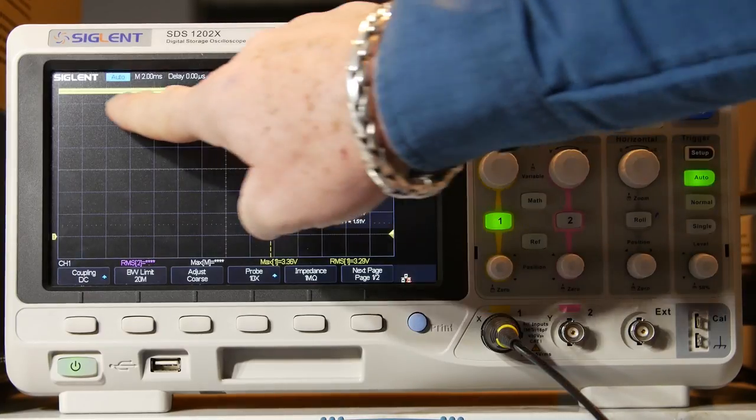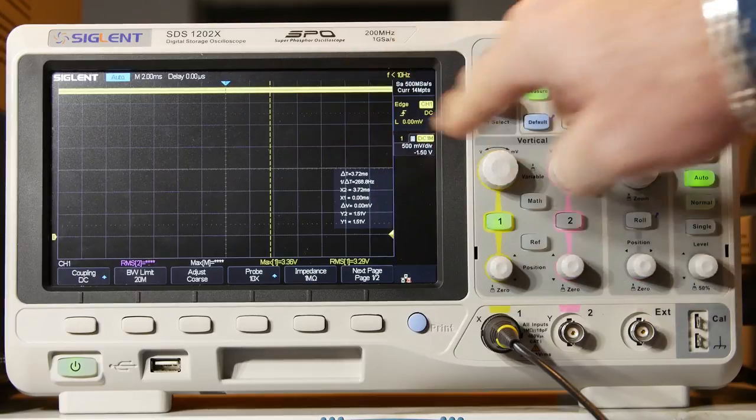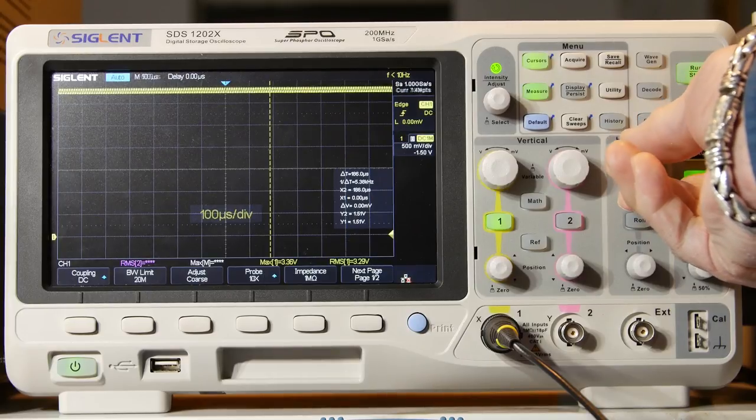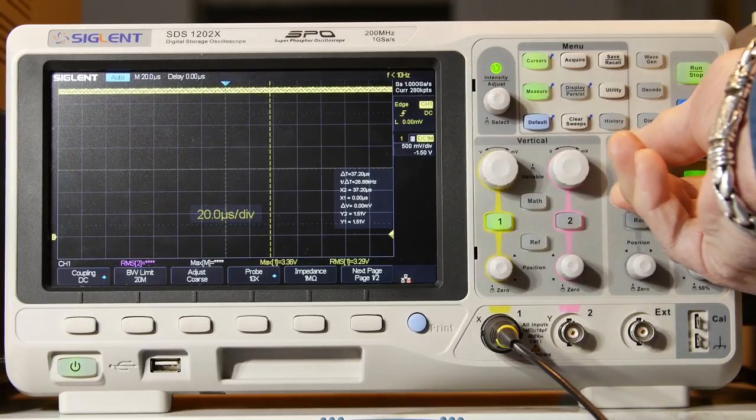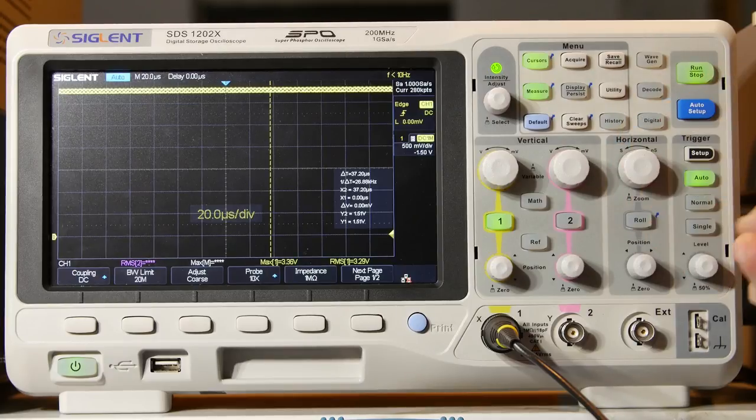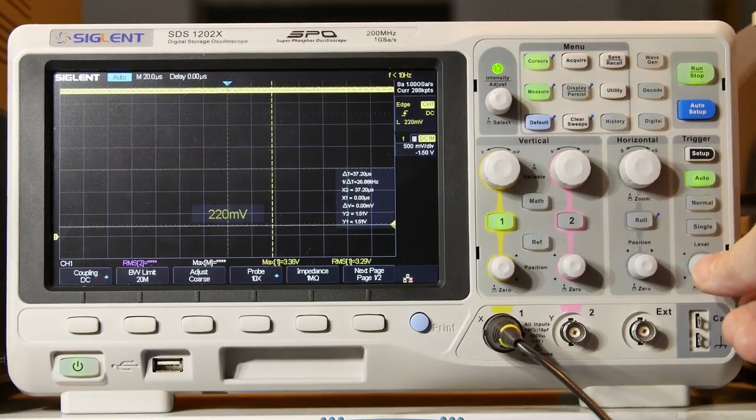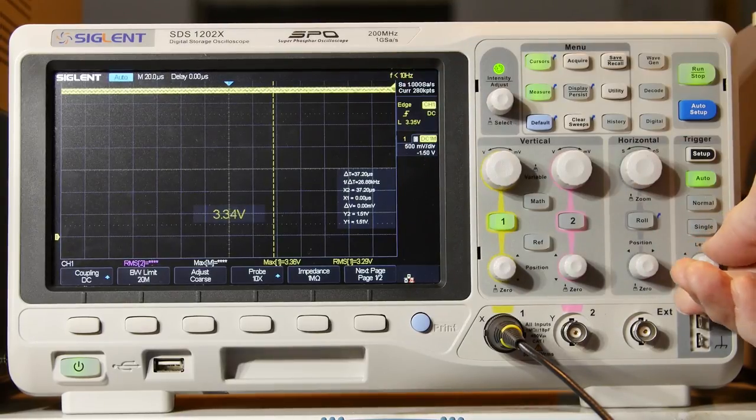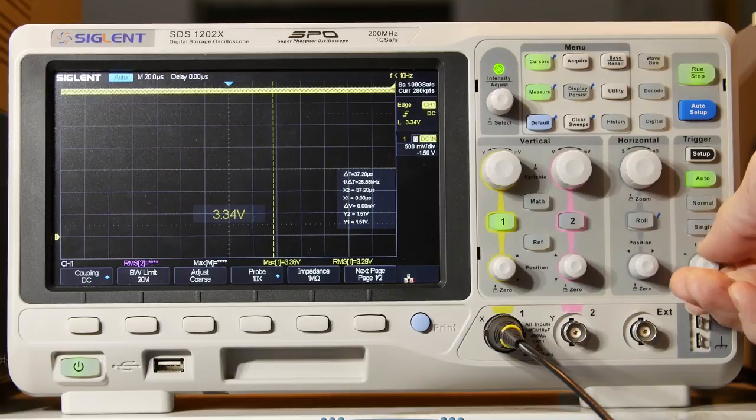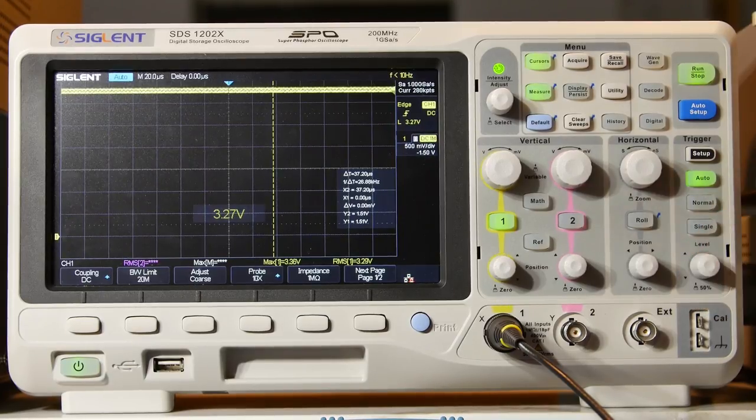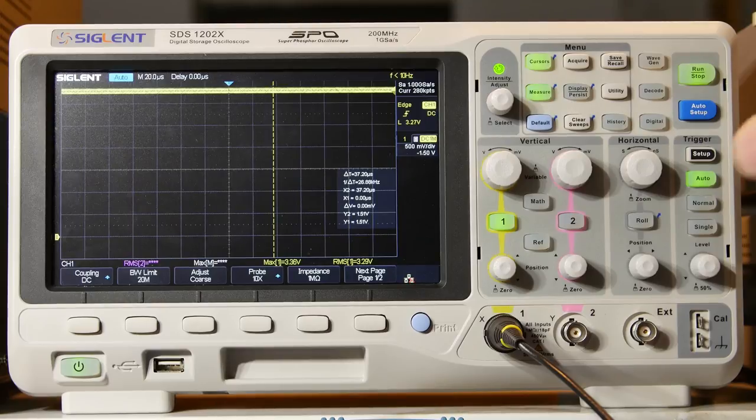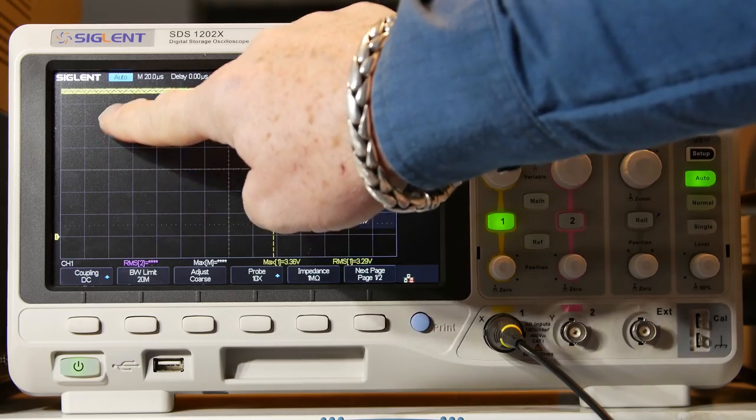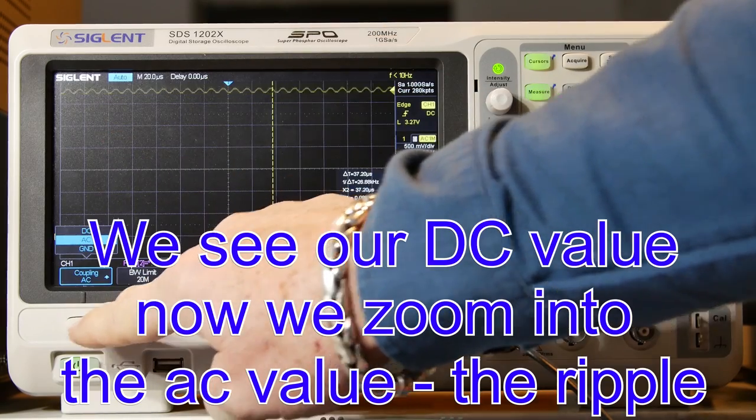We can see by this fuzzy kind of fat line that we have some ripple going on there. I can spread this out. I almost captured it there. It's kind of hard to see. I have to move the trigger up here. I just pushed it in and it popped up there. But that's kind of hard to trigger on that too. It's going to be hard to see ripple that way. So, when you want to look at the ripple, you want to just focus on that. First, we can see that we have 3.3 volts. Now let's look at the ripple.